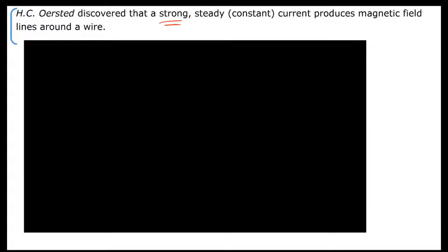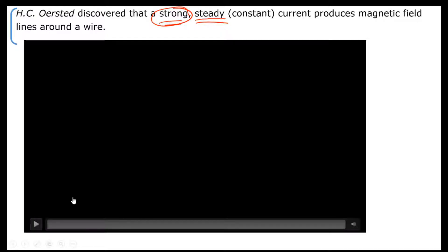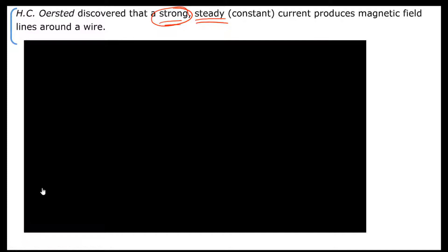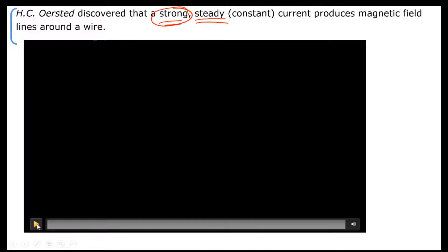Hans Christian Oersted discovered that a strong, steady current produces magnetic field lines around a wire. Why strong? Because a single wire cannot produce a very strong magnetic field if you don't use a very strong current. Steady means constant — like a battery current, which is a constant steady current. Now watch very carefully. MN is doing an experiment just like the one I explained. You are going to see this experiment right now.